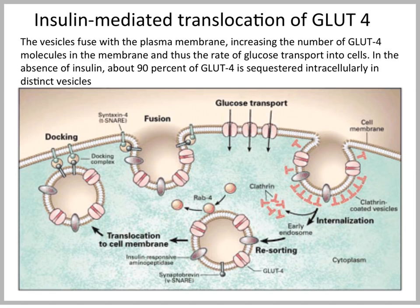The presence of insulin increases the number of GLUT4 transporters at the plasma membrane. In the absence of insulin, about 90% of GLUT4 is sequestered intracellularly in vesicles.